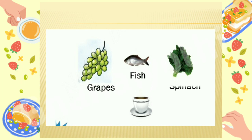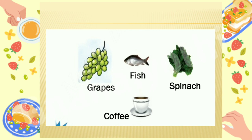Next one is spinach — it's the name of a green leafy vegetable. Next one is coffee — C O double F double E, coffee. These are all names of some food items. I hope you all enjoyed the video. We'll meet again in the next video — until then, bye!